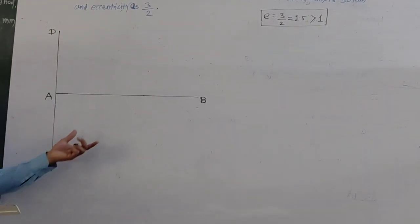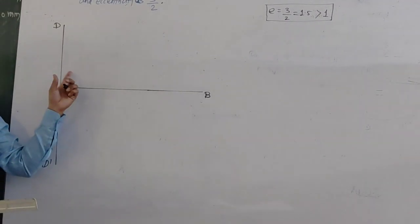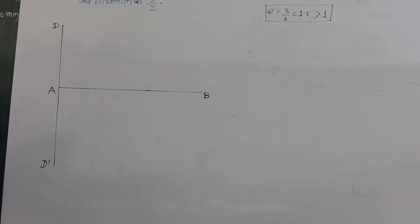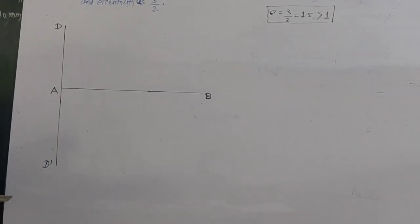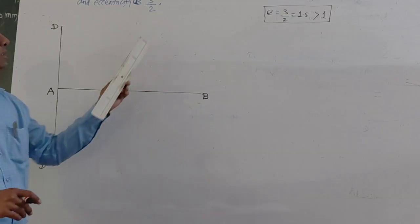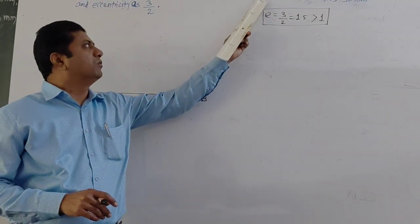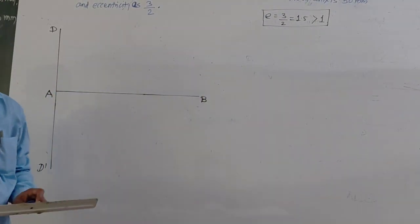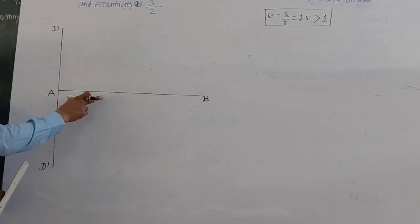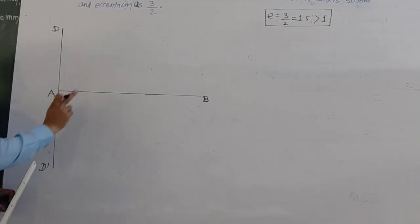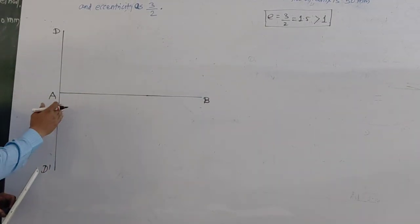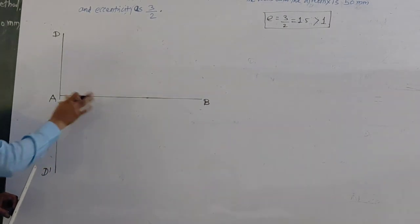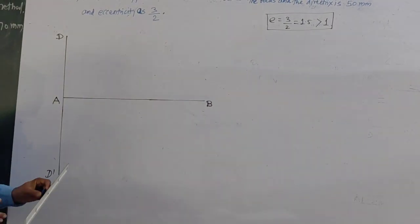The condition is that the principal axis is always perpendicular to the directrix. In our question, the distance between the focus and the directrix is 50mm. You know that the focus is always on the principal axis, so from the directrix, measure 50mm and locate the focus.